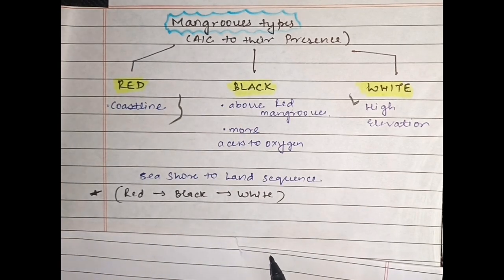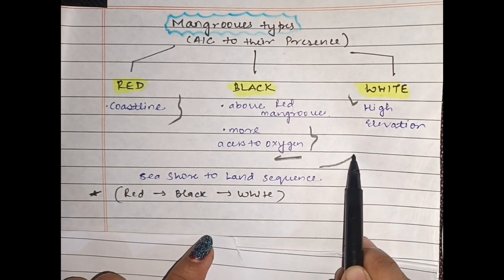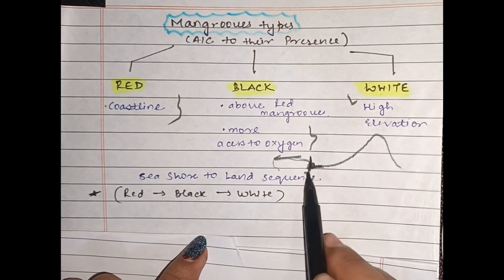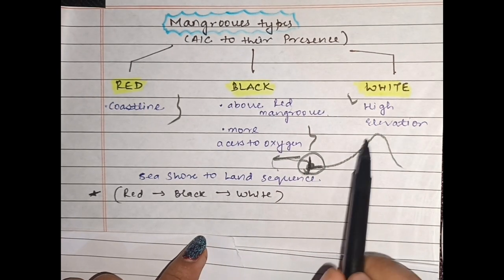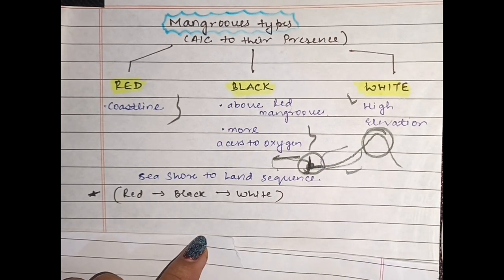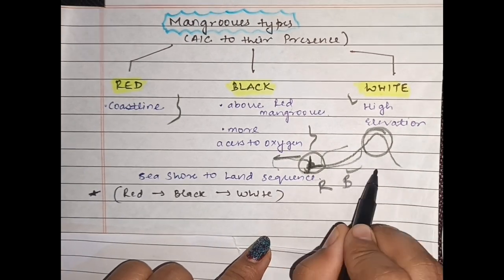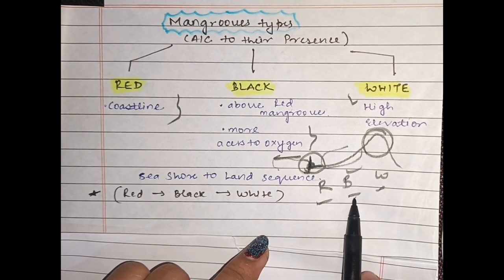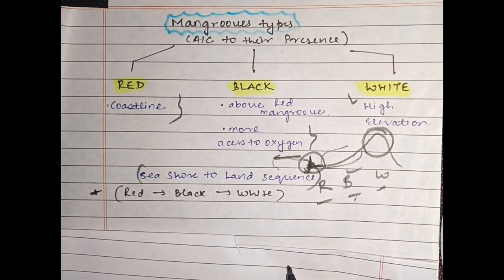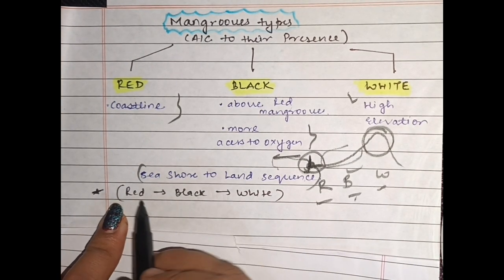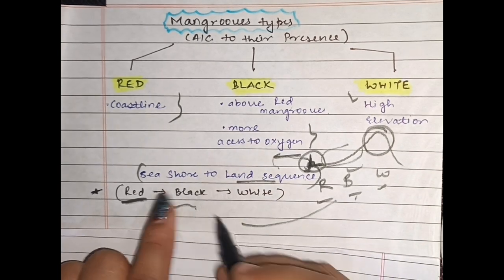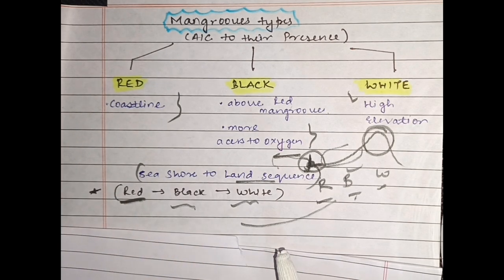Black mangroves have more access to oxygen. So the zonation going from the sea shore inland is: on the sea shore side we have red mangroves; moving inland at middle elevation we have black mangroves; and at the highest elevation we have white mangroves. Remember them as RBW — red, black, and white — from the coastline going towards land.